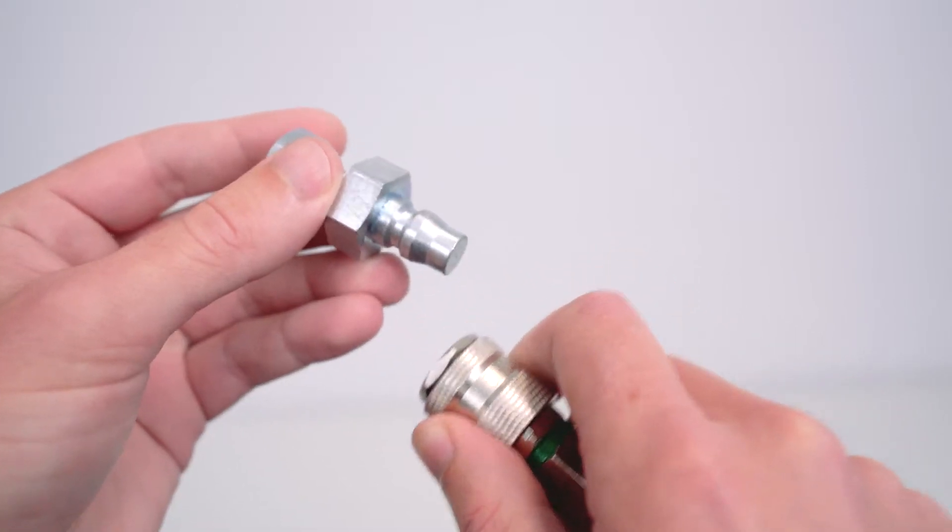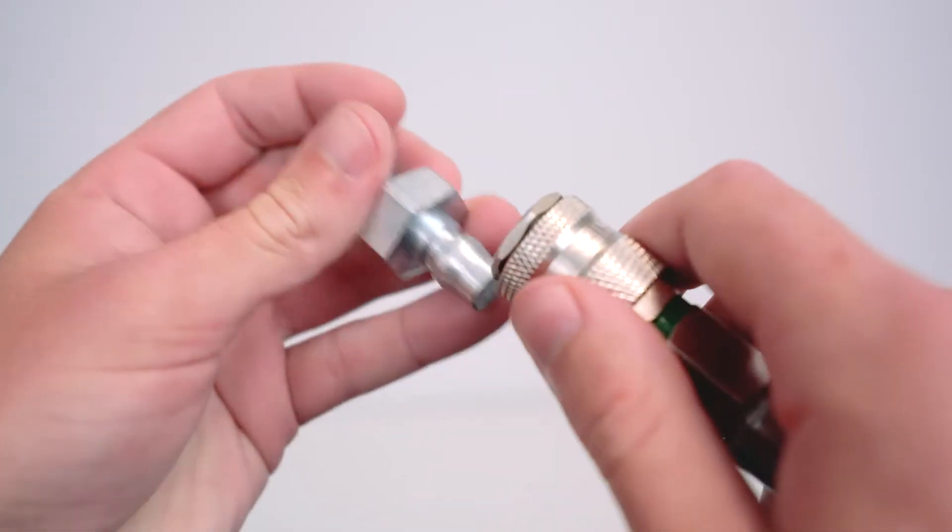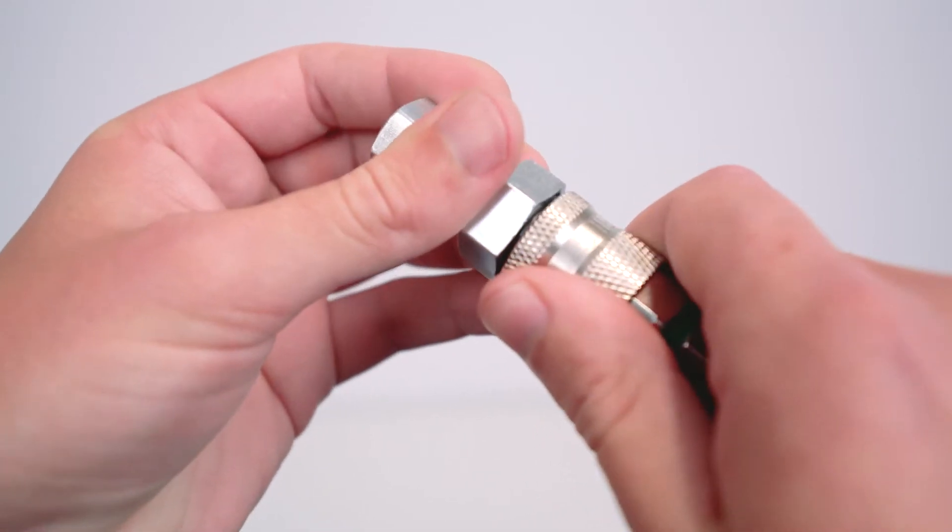It comes with a quick release fitting for easy attachment and removal. The base part of this fitting is attached to your bumper bar via a bolt and nut.